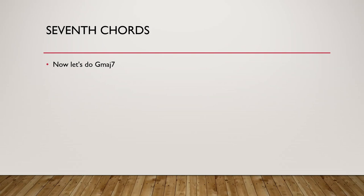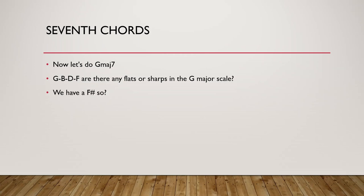Let's now do G major 7th. G, A, B, C, D, E, F — 1, 3, 5, 7. We need to check if all notes are diatonic. G major has 1 sharp which is F sharp. So G major 7th will be G, B, D, F sharp. It's just the same as making a major chord — we pick 1, 3, 5, and then with major 7 we just add the 7th note and check if all notes are in the major scale. And if so, we have created the major 7 chord.